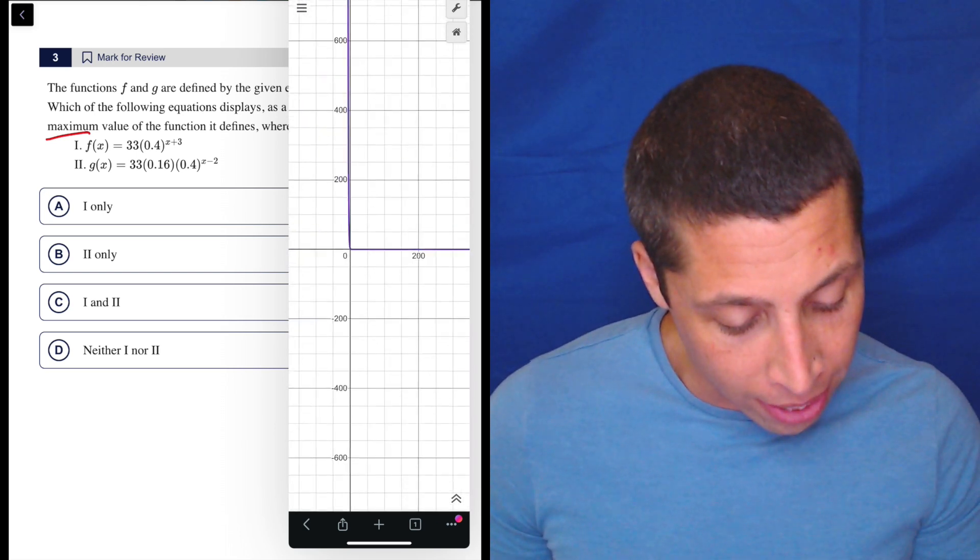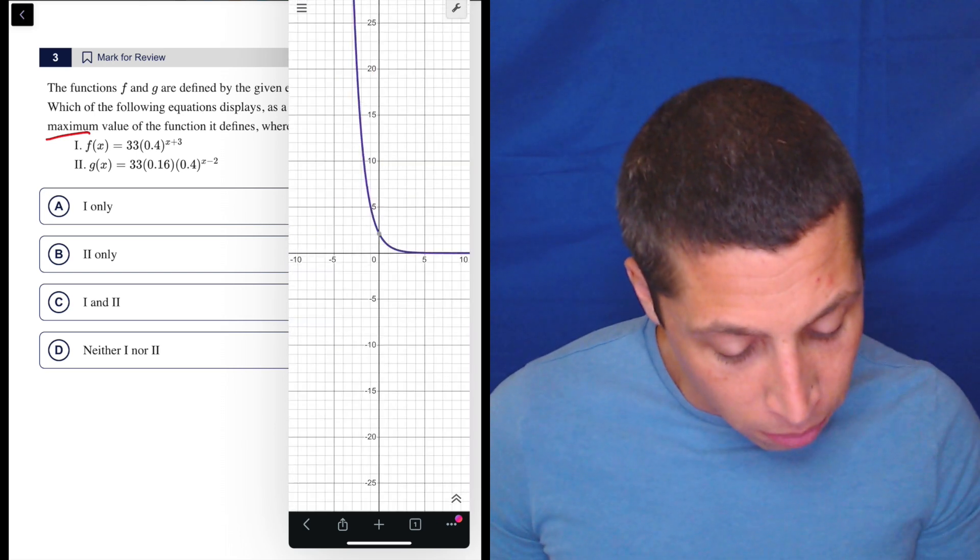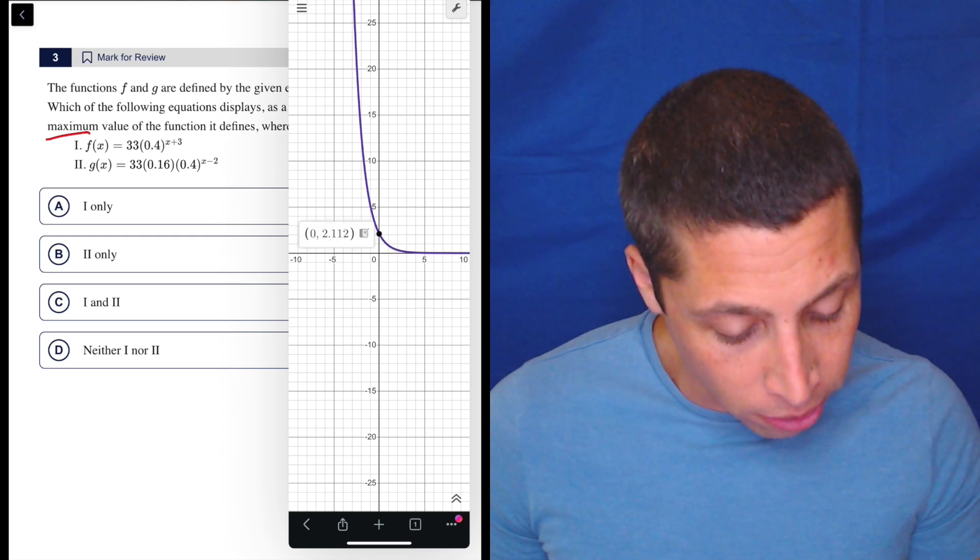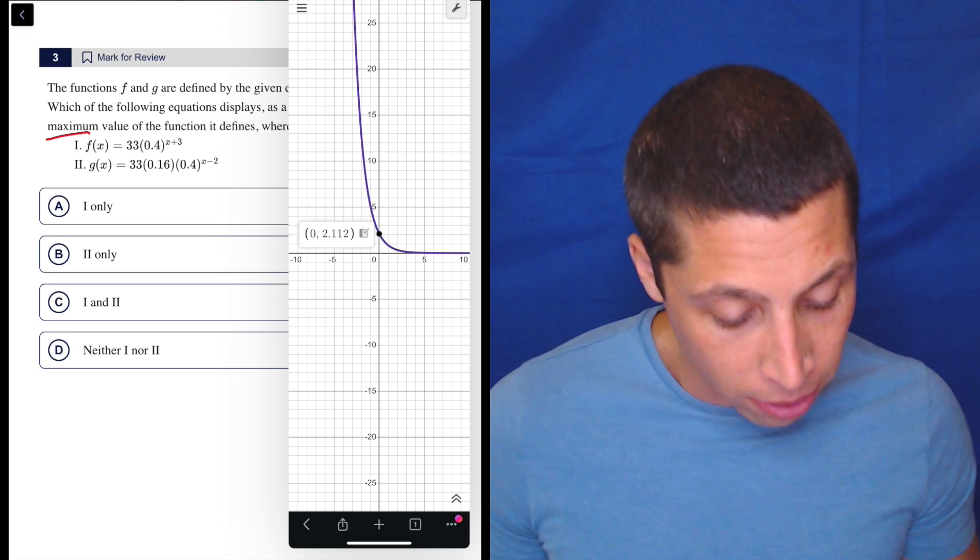I can zoom out. And yeah, I don't think it's going back up. So let's go back. So the maximum here is going to be the y-intercept, it looks like. So that's 2.112.